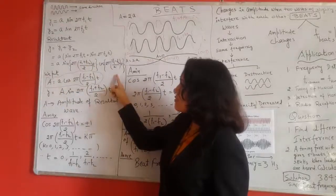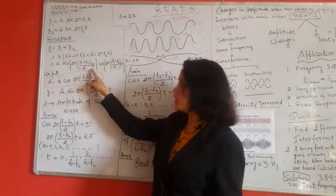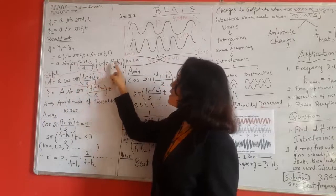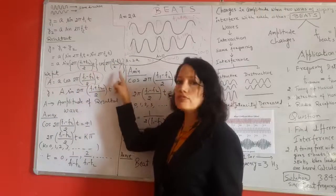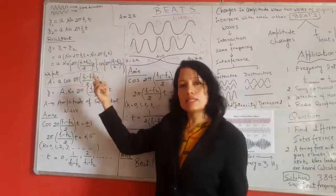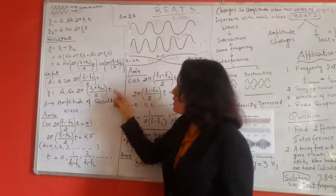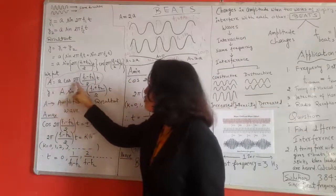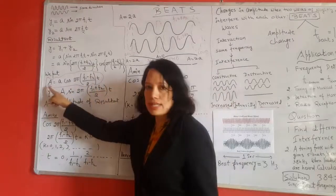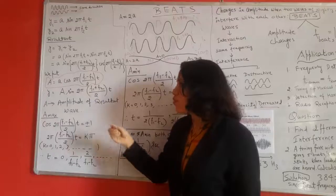Solving this we would get the equation as 2a sin 2π(f1 + f2)/2 t cos 2π(f1 - f2)/2 t. Here we have used the formula sin a + sin b = 2 sin(a + b)/2 cos(a - b)/2. Now we substitute capital A = 2a cos 2π(f1 - f2)/2 t, where this capital A represents the amplitude of the resultant wave.